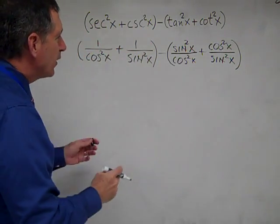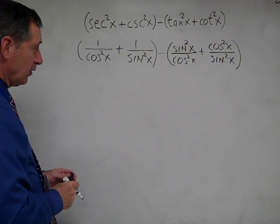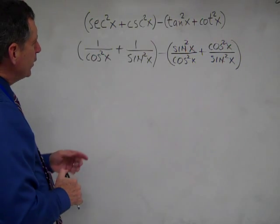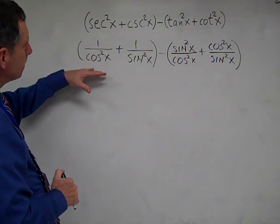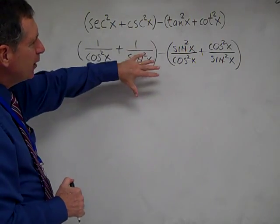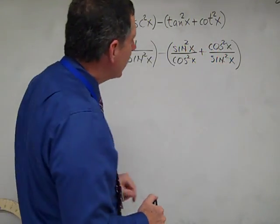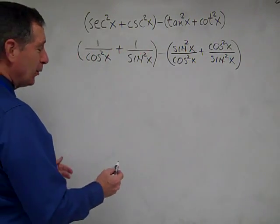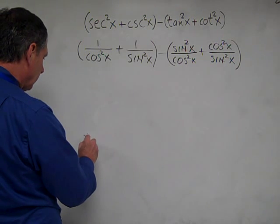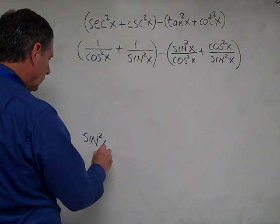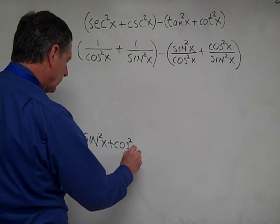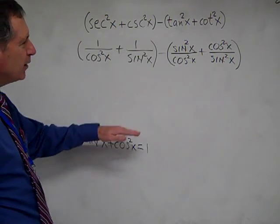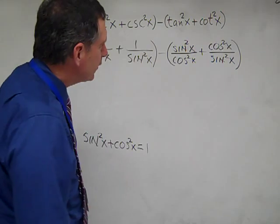So we have those identities in place. Now we're going to work on the right side. Recall the Pythagorean identity: sine squared x plus cosine squared x equals 1. We're going to use this to simplify the right side of our expression.